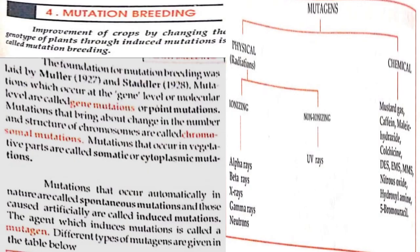Mutation breeding: improvement of crop by changing the genotype of the plant through induced mutation is called mutation breeding. Mutations which occur at a single gene or molecular level are called gene mutation or point mutation. Mutations that bring about change in the number and structure of chromosomes are called chromosomal mutations. Mutations that occur in vegetative parts are called somatic or cytoplasmic mutations. Mutations that occur automatically in nature are called spontaneous mutations, and those that occur artificially are called induced mutations.